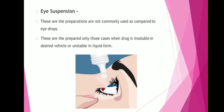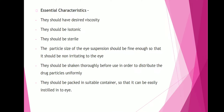Eye suspensions are preparations not commonly used as compared to eye drops. These are prepared only in cases where the drug is insoluble in the desired vehicle or unstable in liquid form. Essential characteristics: they should have a desired viscosity, they should be isotonic, they should be sterile, the particle size should be fine enough to be non-irritating to the eye, they should be shaken thoroughly before use to distribute drug particles uniformly, and they should be packed in a suitable container so that they can be easily instilled into the eye.